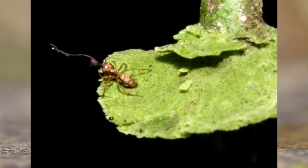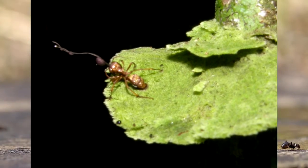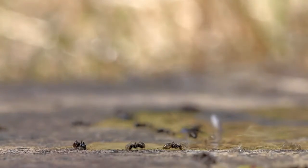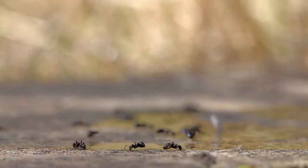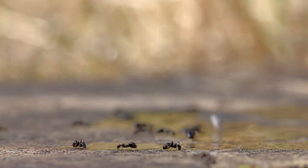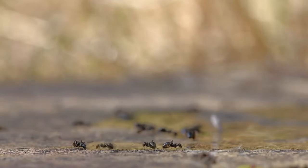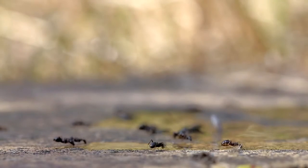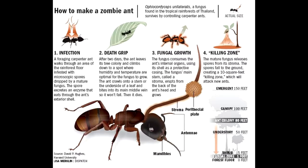At the end the fungus reaches the brain of the ant and makes it behave very strangely. The ant starts moving drunkenly and from time to time it convulses. This type of ant builds their nests at the top of the canopy, and the convulsions make them fall to lower levels.